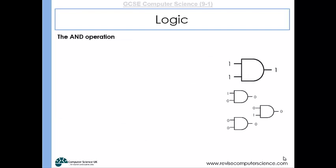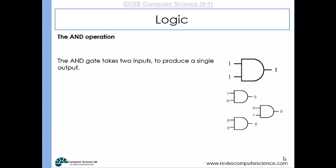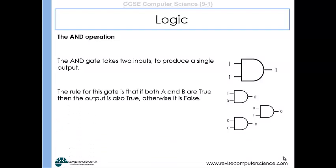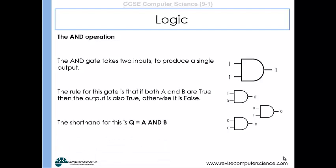The AND operation is another one the CPU can do, denoted by its symbol — I always think of it as looking like a D, and AND finishes with a D, so that's how I remember it. The AND gate takes two inputs and produces a single output. The rule is: if both A and B are true — both ones going in — then the output will be one. If only one input is one, or if they're both zero, then the output will be zero. The shorthand is: Q equals A AND B.